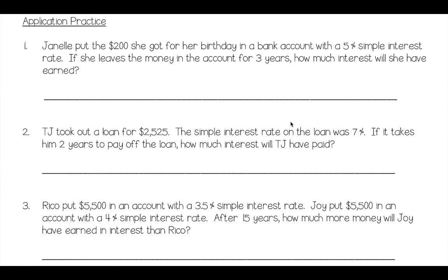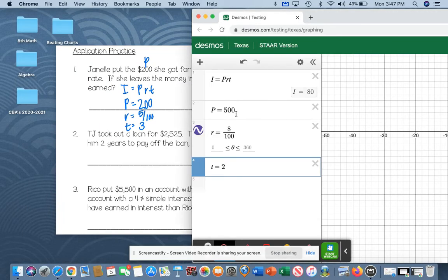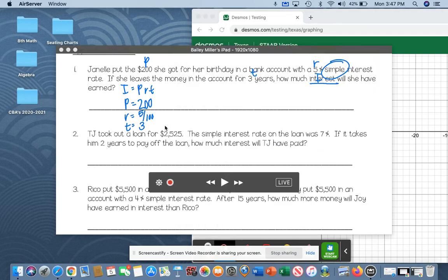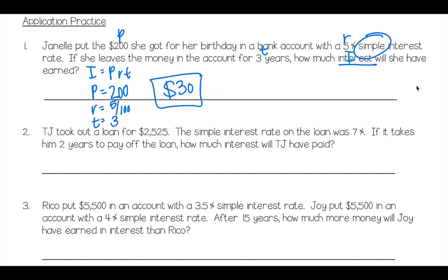Number one. Janelle put the $200 she got for her birthday in a bank account with a 5% simple interest rate. If she leaves money in the account for three years, how much interest will she have earned? So I equals PRT. And we have our P. We have our R. And we have our T, which is three. Desmos. Look how easy this is. Just don't get confused on the formulas. Because there's two interest formulas. Very true. $30. Ooh. Do I need to add that to the $200? No. Because it just wants interest.